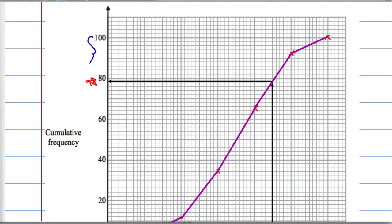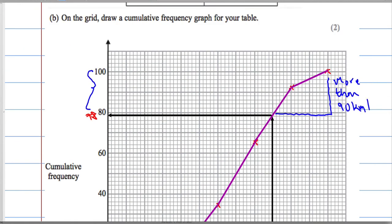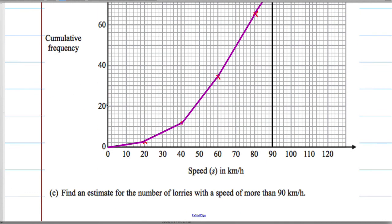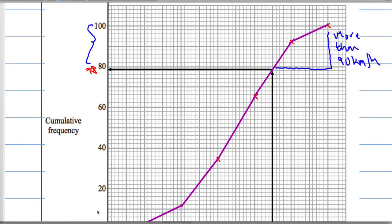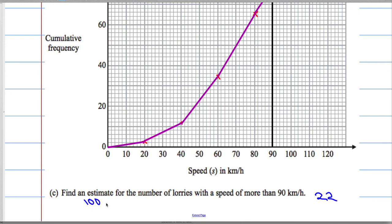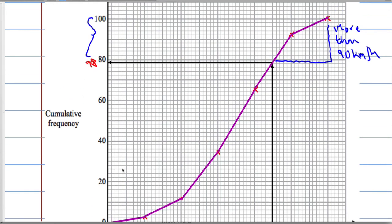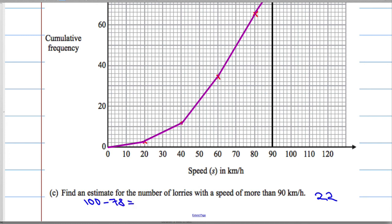Which means everyone else above here had a speed of more than 90 kilometers. So this part here represents more than 90 kilometers. I subtract 78 from 100 to get 22. So 22 people had a speed of more than 90 kilometers. We did the total cumulative frequency take away the number that had less than 90, which was 78, to get 22.